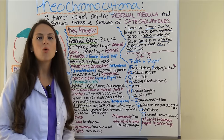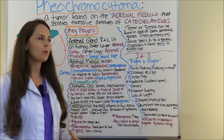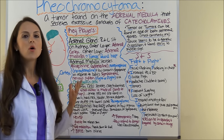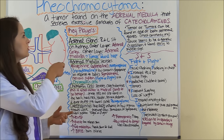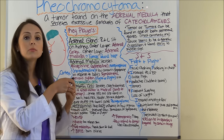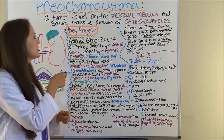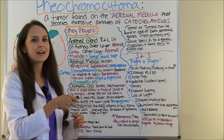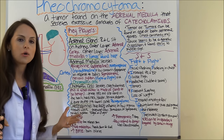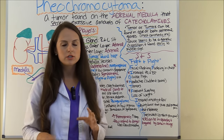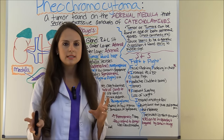First, let's talk about what is pheochromocytoma. This condition is where a tumor is found on the adrenal medulla that secretes excessive amounts of catecholamines. Let's dive into the pathophysiology and see what's going on in this condition.